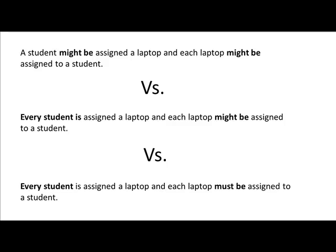Now let's start refining our relationship notation. Consider the same relationship but three different variations. A student might be assigned a laptop, and each laptop might be assigned to a student. When we say 'might be assigned,' it means a student need not necessarily have a laptop — some students are assigned, some are not — but if assigned, they get only one laptop.